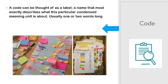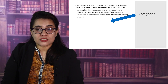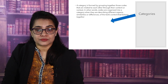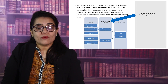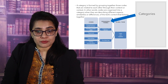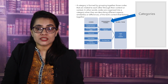A code can be thought of as a label — a name that most exactly describes what a particular condensed meaning unit is about, usually one or two words long. Then comes category. A category is formed by grouping together those codes that are related to each other through their content or context.